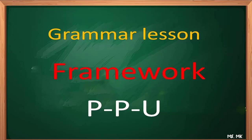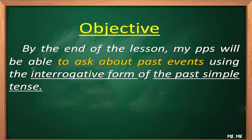The objective of my lesson is: by the end, my pupils will be able to ask about past events using the interrogative form of the past simple tense. It's better to say 'to ask' because it's the interrogative form. Here it's to ask about past events in general.